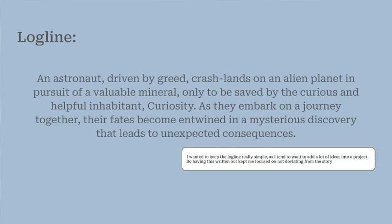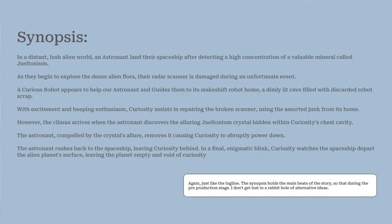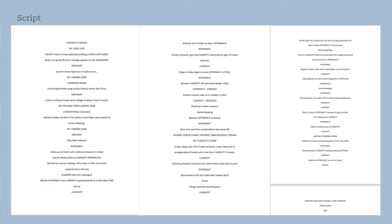I wanted to keep the logline really simple, as I tend to have a lot of ideas and can sometimes stray away from the original story, especially during the production stage. So being able to have a solid script and a summary of the film was important for me to not overcomplicate the idea. The same goes for the synopsis as well. For the script, it was my way of showing I had a solid understanding of what the beginning and ending would look like. It's a combination of everyone's ideas, where we left the middle climax empty as we still hadn't figured out what was going to happen.